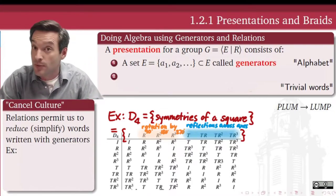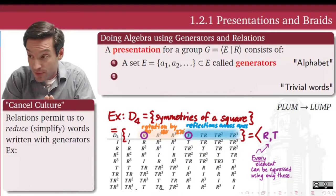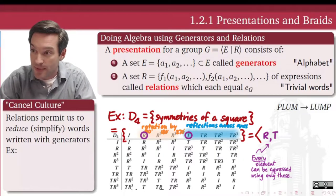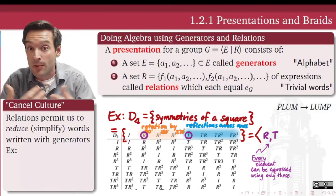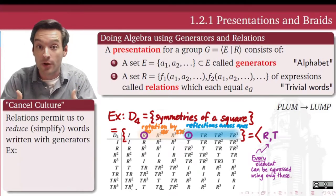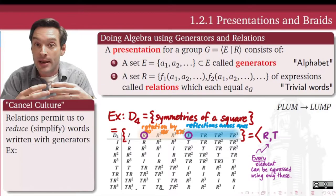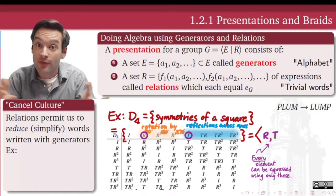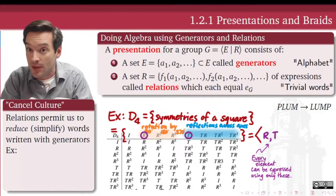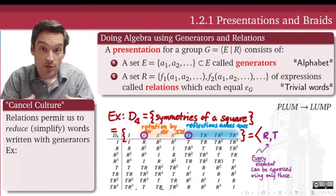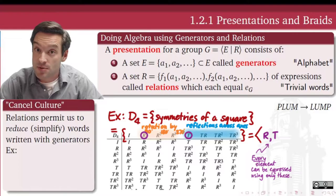That's what makes T and R generators for the dihedral group of the square. But knowing the generators alone is not enough, because we also don't know how R and T interact with one another, or how they interact with the identity element. That information comes from what we call the relations. A relation is nothing more than an expression — a word built out of my alphabet of generators — that we have decided is equal to the identity element. Relations are trivial words: combinations of letters that, when seen in an expression, can be cancelled out because they reduce to the identity.